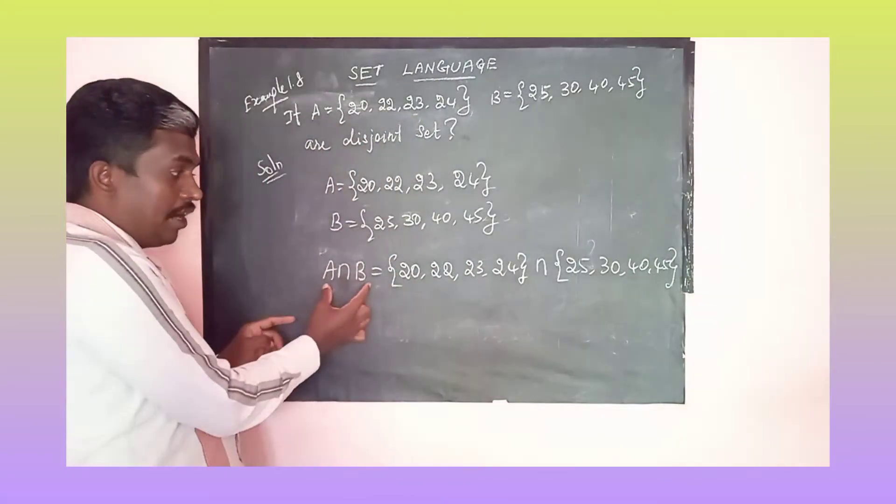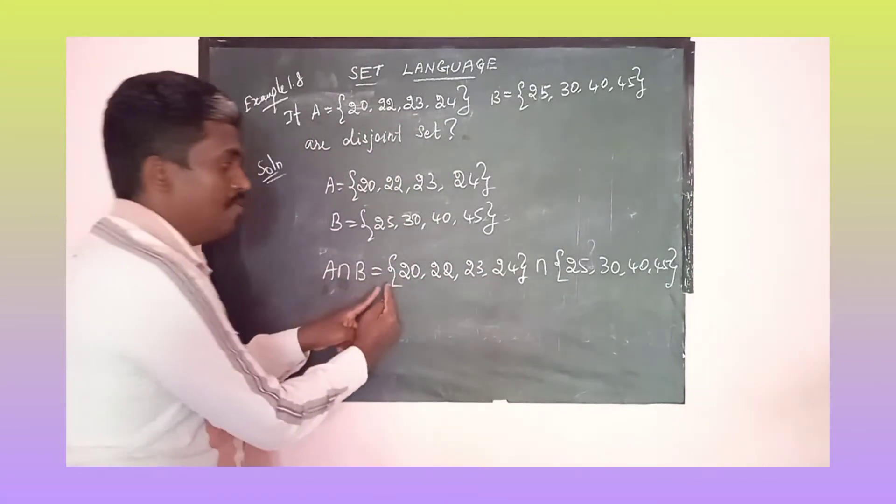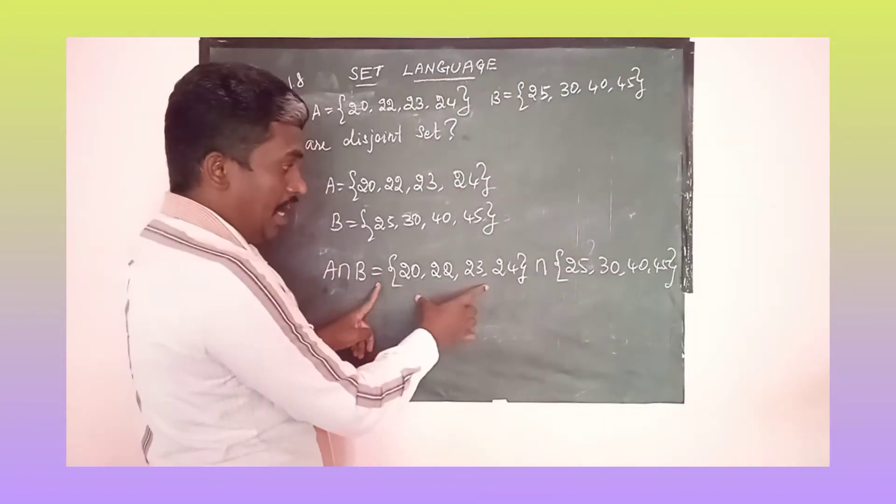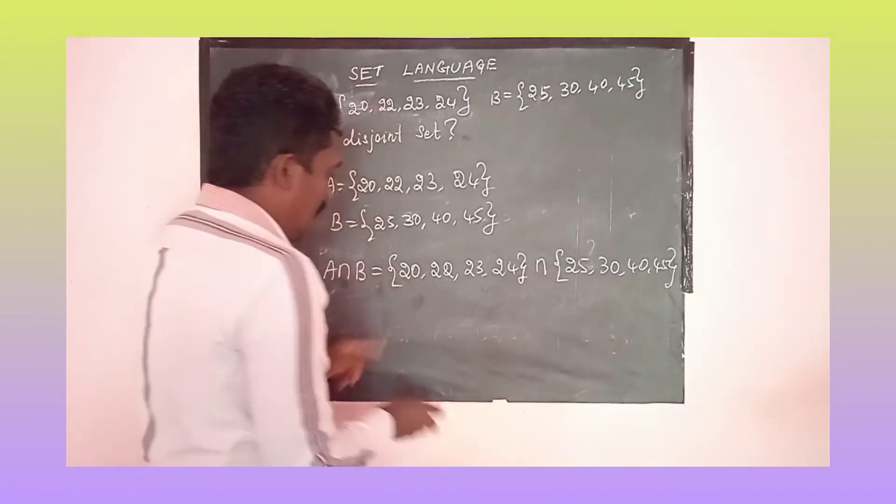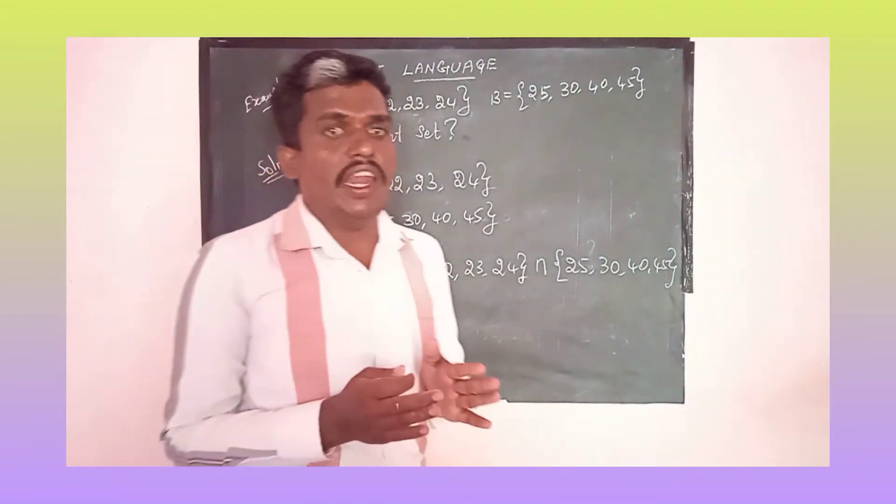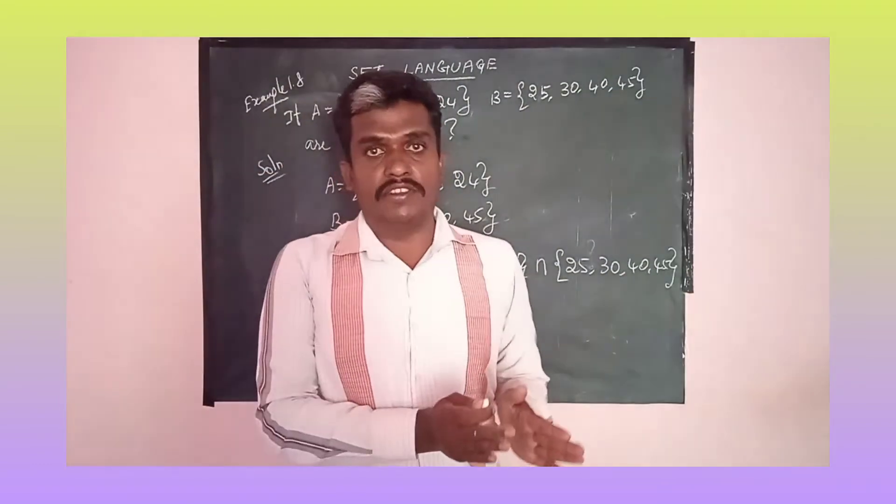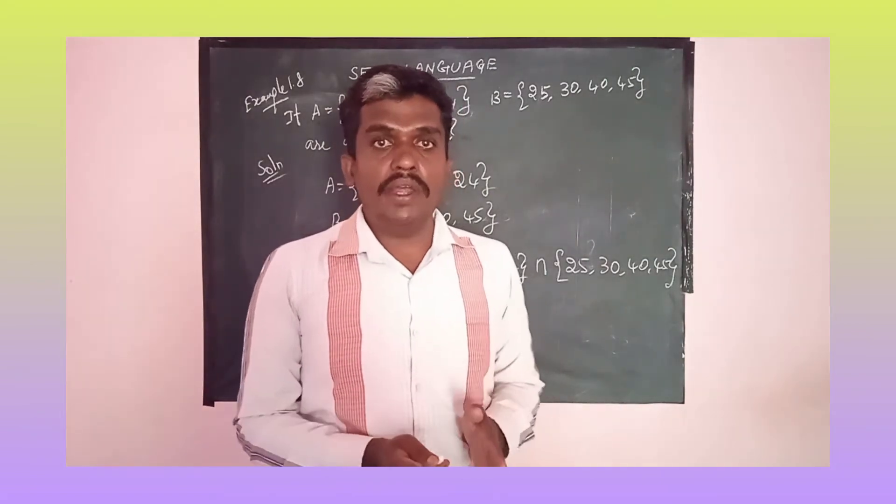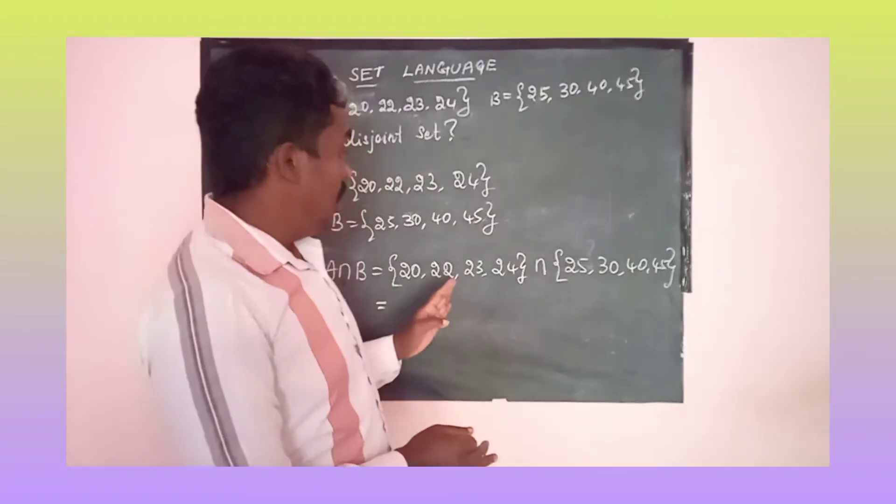Whatever we write on this side, the same way you have to write on that side. For A intersection B, what is intersection? We have to select the common elements from both A and B.